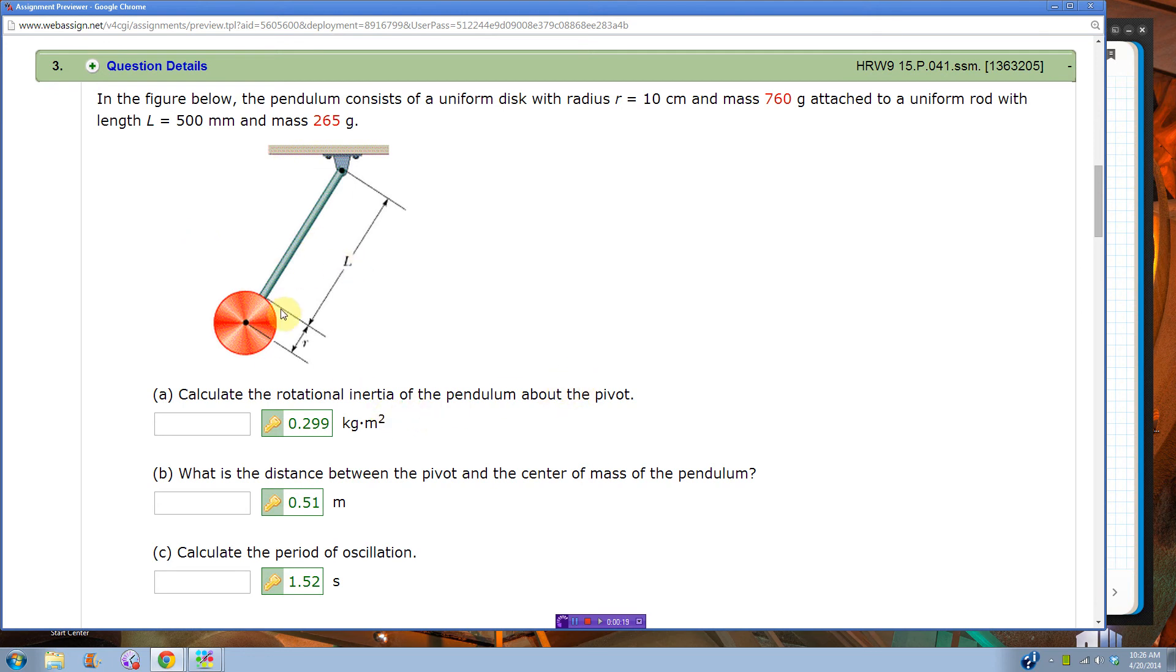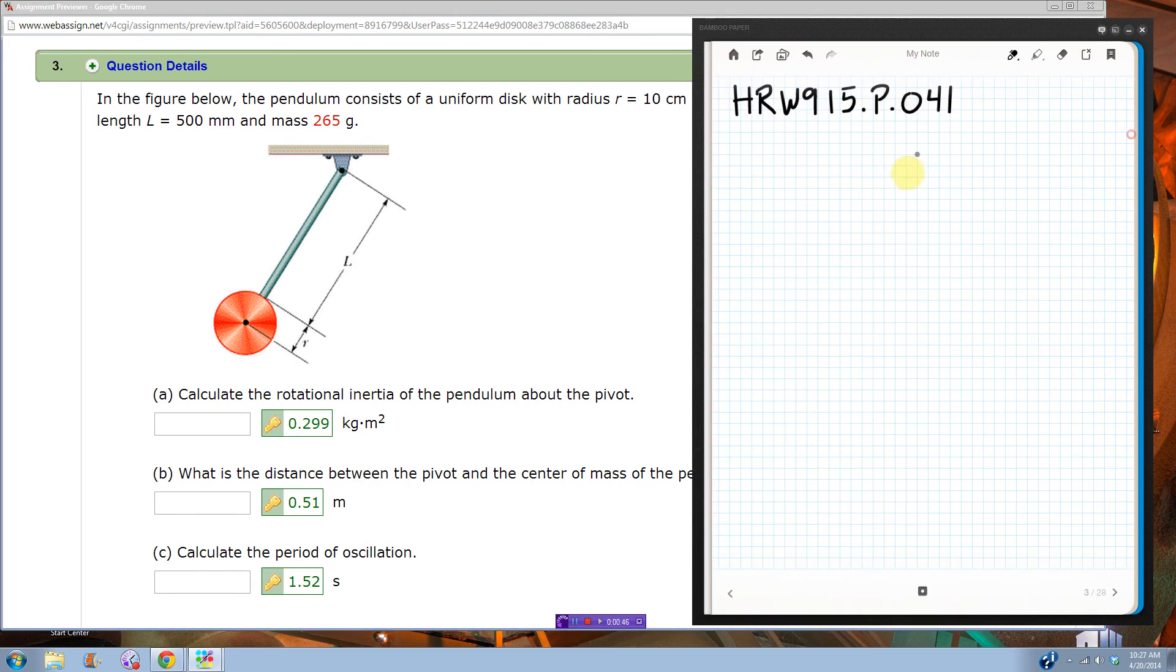Alright, so first thing we've got to do is figure out, okay, the pivot is here, so what I really have is I've got a rod, and we know the rotational inertia of a rod pivot around its end, and we have a disc. The disc, though, we can treat as if it is a point mass at its center of mass, which is right on the end of the rod. So you've got two things, all we have to do is add up the rotational inertias to find the total rotational inertia.